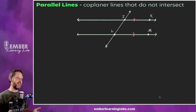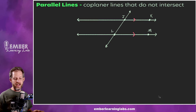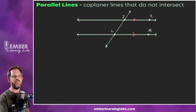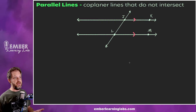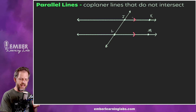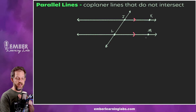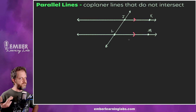Let's get a formal definition. Parallel lines are coplanar lines — that's the key — lines that are on the same plane that never intersect. One thing worth noting is the new symbol we're adding: two little arrows like that, which means 'parallel.' So line JK is parallel to line LM — that's what those symbols mean.